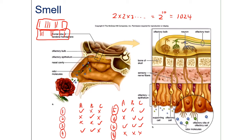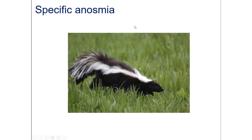Some people have what's called specific anosmia — the inability to smell certain things. Perhaps the best smell to not be able to detect is the smell of a skunk. There are people who cannot register the strong scent from skunk spray, which is a sulfur-containing compound. That's a relatively good thing to have.